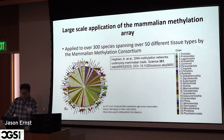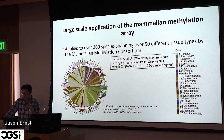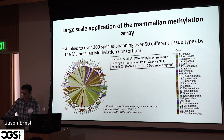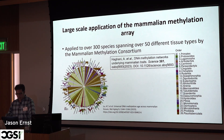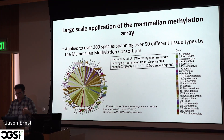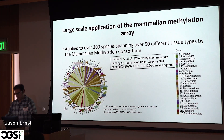Steve Horvath assembled a consortium called the Mammalian Methylation Consortium, which collected over 15,000 samples representing more than 300 mammals and over 50 different tissue types. They were all profiled here at UCLA to minimize batch effects. This large unique dataset has enabled multiple papers on universal clocks across species and how species-level traits such as lifespan or BMI relate to epigenetic marks.